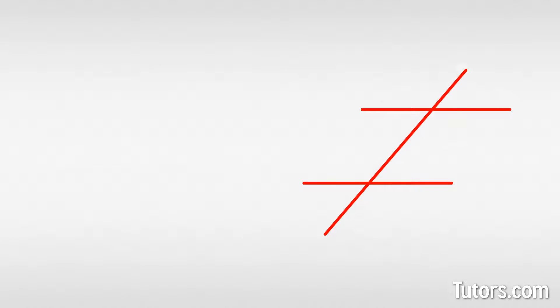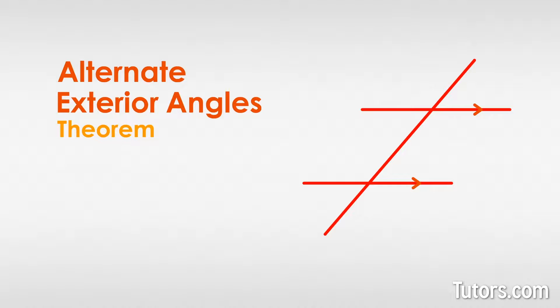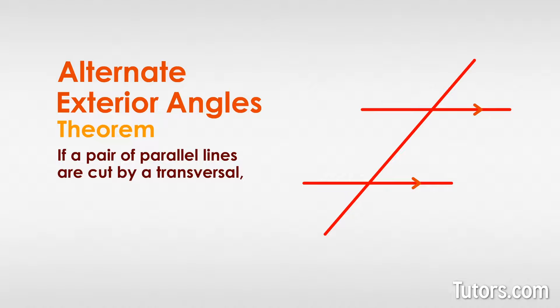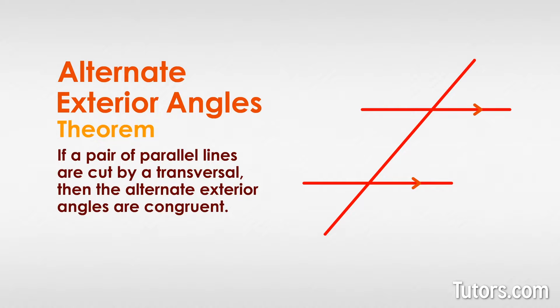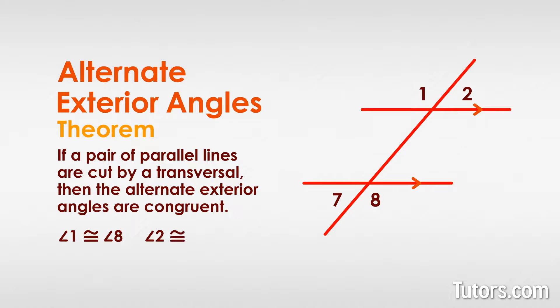Now let's look at this again with parallel lines. When two lines are parallel, the transversal creates congruent alternate exterior angles. The Alternate Exterior Angles Theorem states that if a pair of parallel lines are cut by a transversal, then the alternate exterior angles are congruent. Here we have a new pair of parallel lines crossed by a transversal. The exterior angles are angle 1, angle 2, angle 7, and angle 8. Because the lines crossed by the transversal are parallel, we can state that angle 1 is congruent to angle 8, and angle 2 is congruent to angle 7.